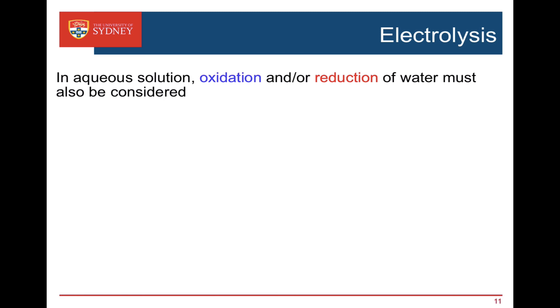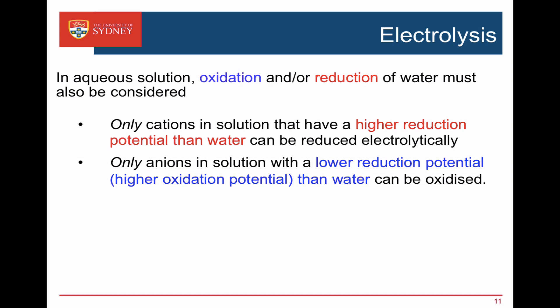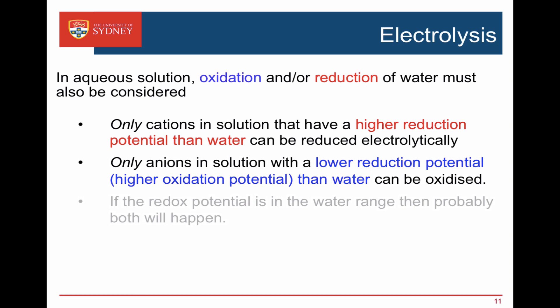When we set up an electrolytic cell using aqueous solutions, we could also get the possibility of electrolysis of water — we could oxidise or reduce water instead of our cations and anions. Only cations in solution that have a higher reduction potential than water can be reduced; if not, it's the water that is reduced. We can only oxidise anions that have a lower reduction potential, or higher oxidation potential, than water; otherwise, water would be oxidised. And if the redox potentials are in the water range, we could get both things happening.